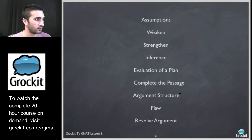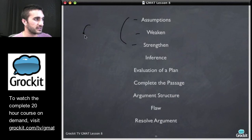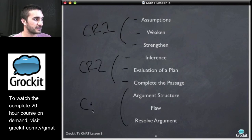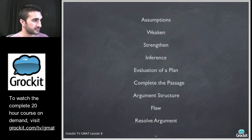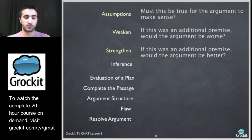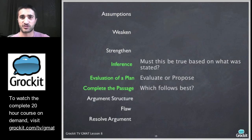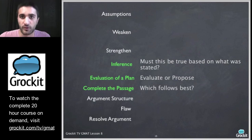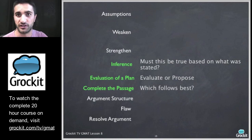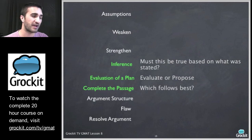When we started, we worked on assumption, weaken, and strengthen questions in our first Critical Reasoning class. Today we're going to look at inference, evaluation of a plan, and complete the passage. On inference questions, we ask ourselves: must this be true based on what was stated? An inference is a paraphrasing — saying the same thing with different words — and we need to be able to point to the answer, just like in reading comprehension. On evaluation of a plan questions, they're asking us to either evaluate a plan or propose a plan.